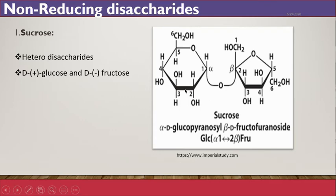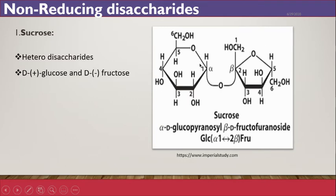The glucose molecule is in the pyranose form — a six-membered ring structure — while fructose is in the furanose form. Glucose and fructose are joined through an o-glycosidic linkage present between the anomeric carbon at the first carbon of glucose and the anomeric carbon of fructose at the second carbon. This linkage is called alpha-1 of glucose and beta-2 of fructose, because fructose is in the beta form while glucose is in the alpha form.